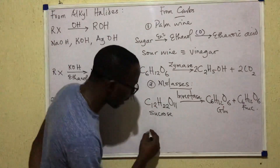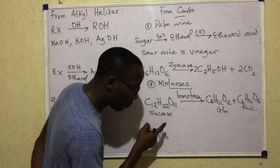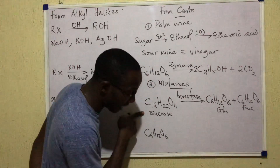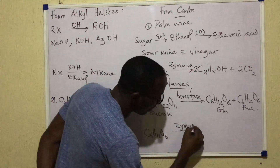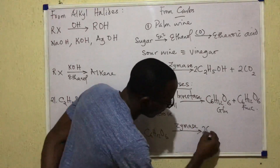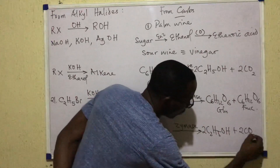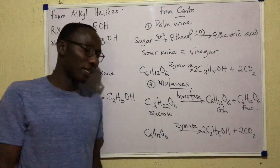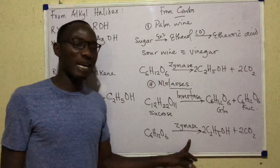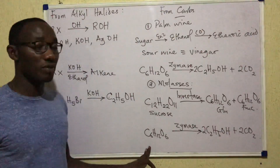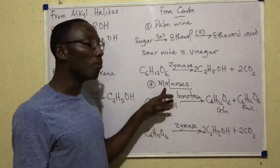In a second step, the glucose C6H12O6 — the product of hydrolysis of the disaccharide — is broken down by zymase to give ethanol plus CO2. So we have prepared ethanol from glucose by the action of zymase, but our starting material was sucrose in the form of molasses. This gives a two-step reaction because we started with a disaccharide.